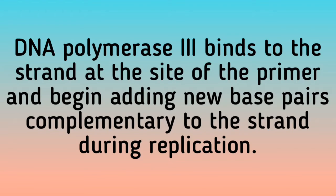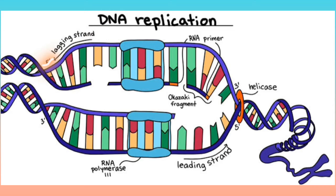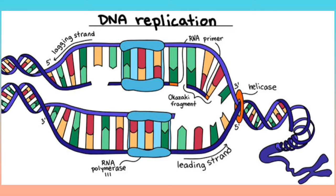DNA polymerase 3 binds to the strand at the site of the primer and begins adding new base pairs complementary to the strand during replication. In eukaryotic cells, polymerases alpha, delta, and epsilon are the primary polymerases involved in DNA replication. Because replication proceeds in the 5' to 3' direction on the leading strand, the newly formed strand is continuous. The lagging strand begins replication by binding with multiple primers, each only several bases apart. DNA polymerase then adds pieces of DNA, called Okazaki fragments, to the strand between primers. This process of replication is discontinuous as the newly created fragments are disjointed.